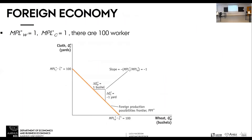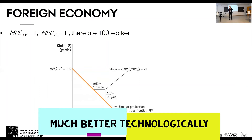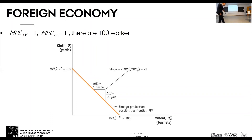Now let's look at the foreign economy. The foreign economy has 100 workers — a bigger economy than home. The marginal product of labor in both wheat and cloth is one unit. We're making things more interesting by assuming the home country is much more productive than the foreign economy. But what we want to show is that that doesn't matter. You can draw the production possibility frontier as before. Here the slope is one.